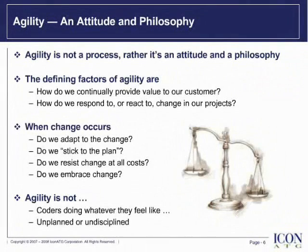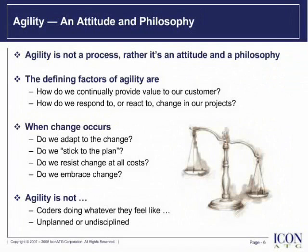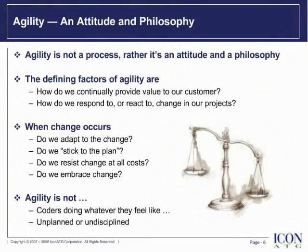I also want to take a moment to talk about what agility is not. Agility is not coders doing whatever they feel like. For example, if you have compliance regulations and you need to document certain portions of the system so you can meet SOX, SEC, or FDA regulators, then by all means document it. Agile says do what you must, but do no more. Also, being agile doesn't mean that things are unplanned or undisciplined. When working with an agile mindset, you realize there comes a point that if you plan out too far, it starts to lose its value. So we like to plan things based on a horizon and realize there are diminishing returns when we go too far beyond that horizon.